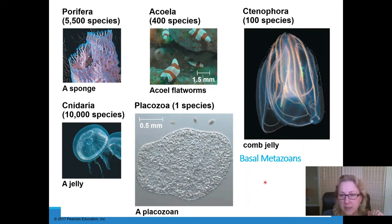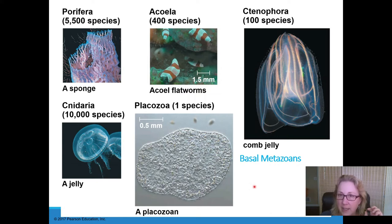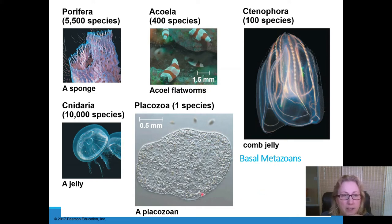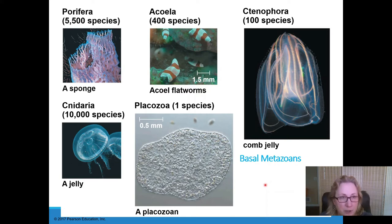Here are some of the basal metazoans. Metazoan is the scientific word for animal. By basal, we mean these are the most primitive — these were probably the first to evolve. Some of these we have fossil evidence for during the Ediacaran, like jellyfish and sponges. These five phyla are considered to be the most basal, meaning the earliest to diverge and the oldest phyla in the animal kingdom.